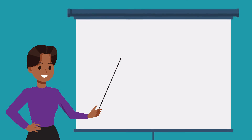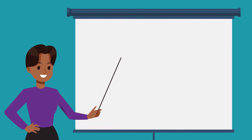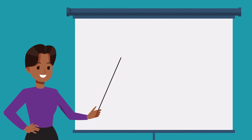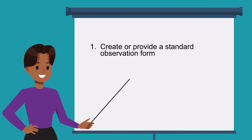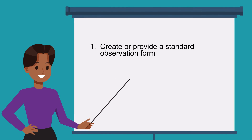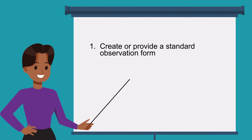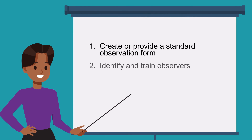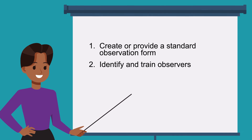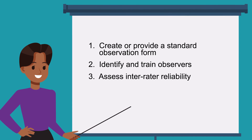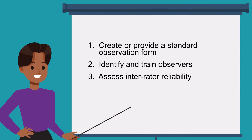When collecting data through observations, follow these steps to collect consistent data: 1. Create or provide a standard observation form. 2. Identify and train observers. 3. Assess inter-rater reliability.